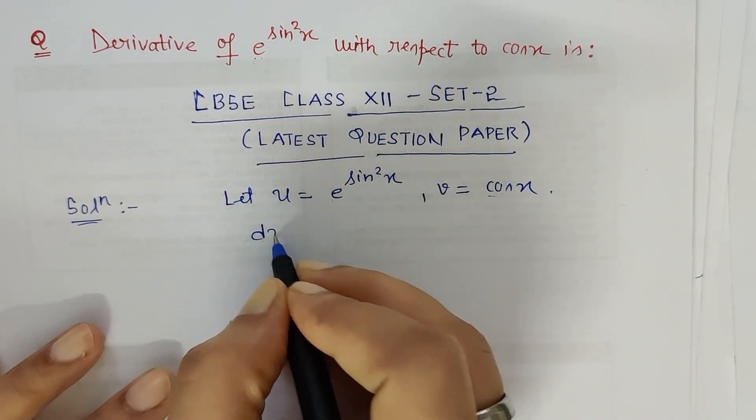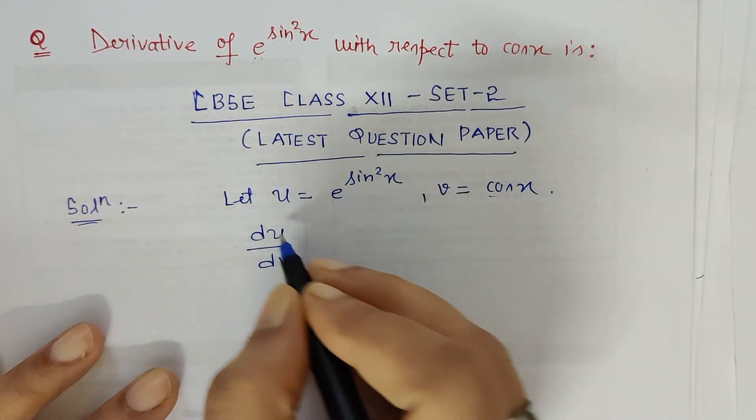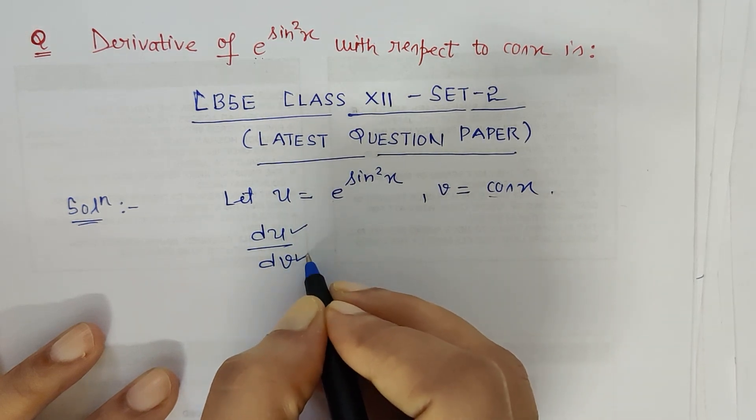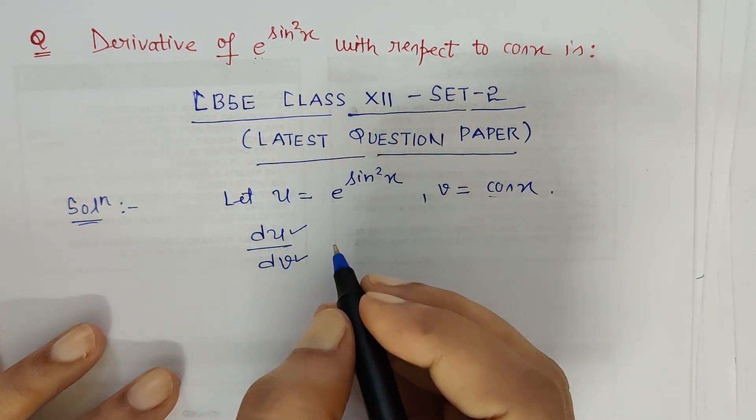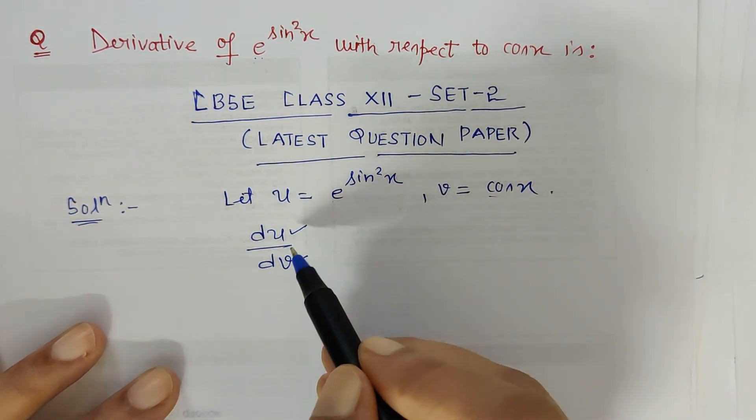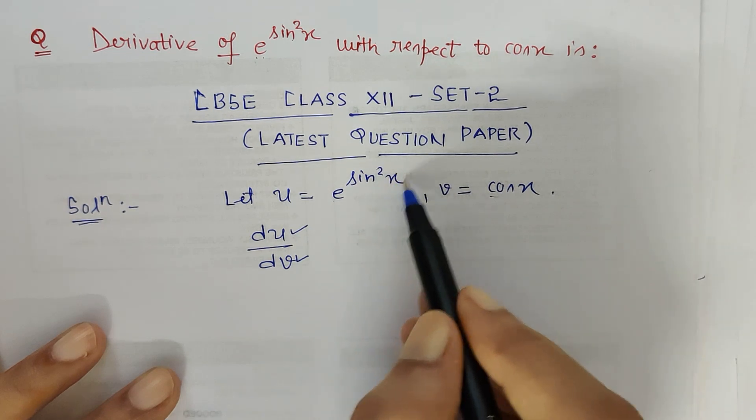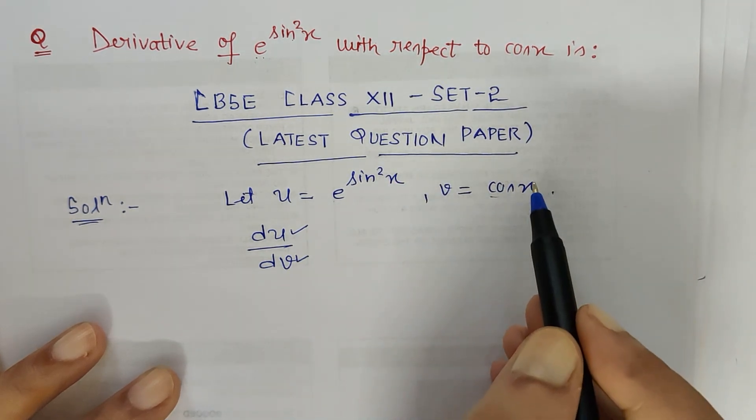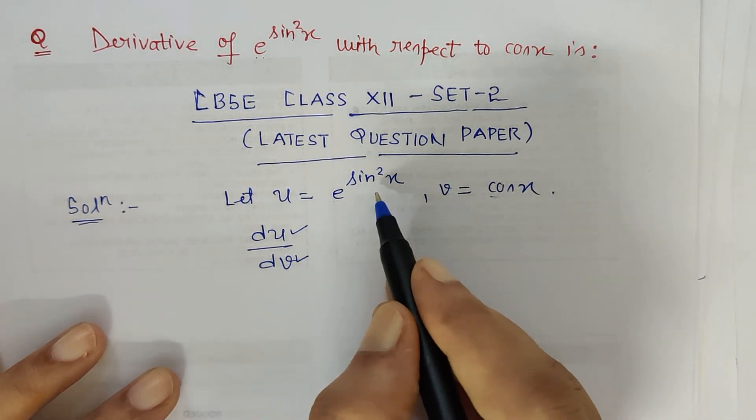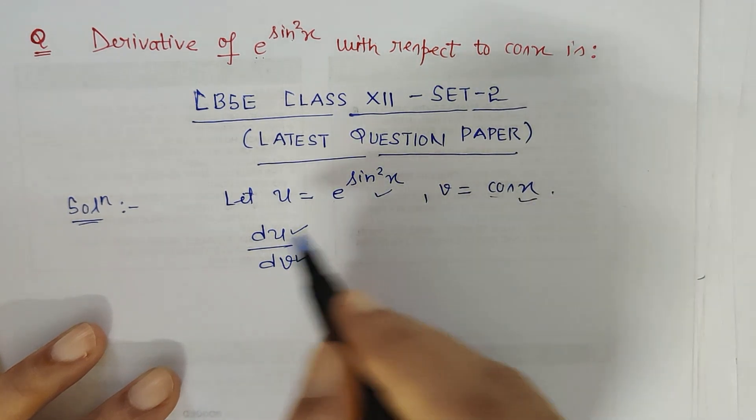So how do we write du upon dv? That means derivative of u with respect to v. But before that, what do we see? We see that u has x variable, v has x variable. So why not differentiate them separately first and then substitute.